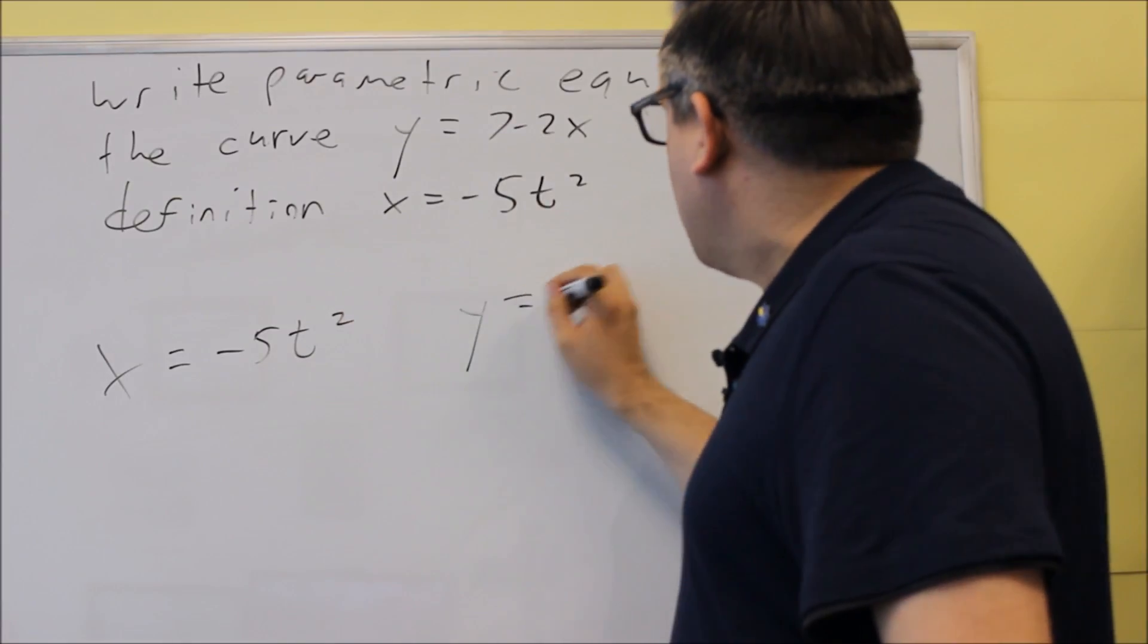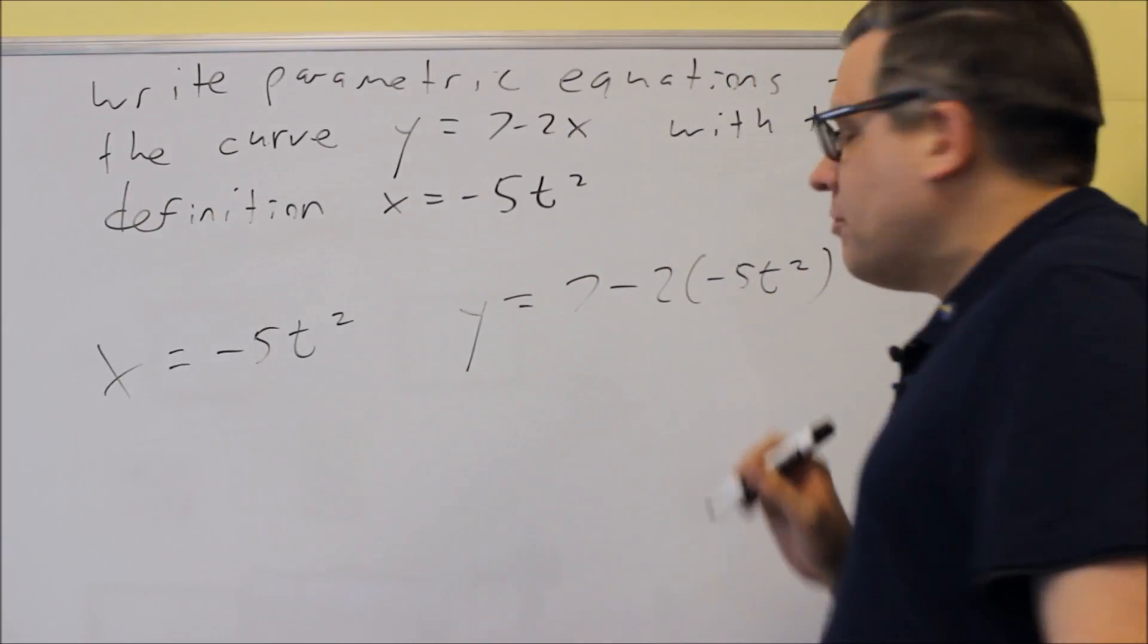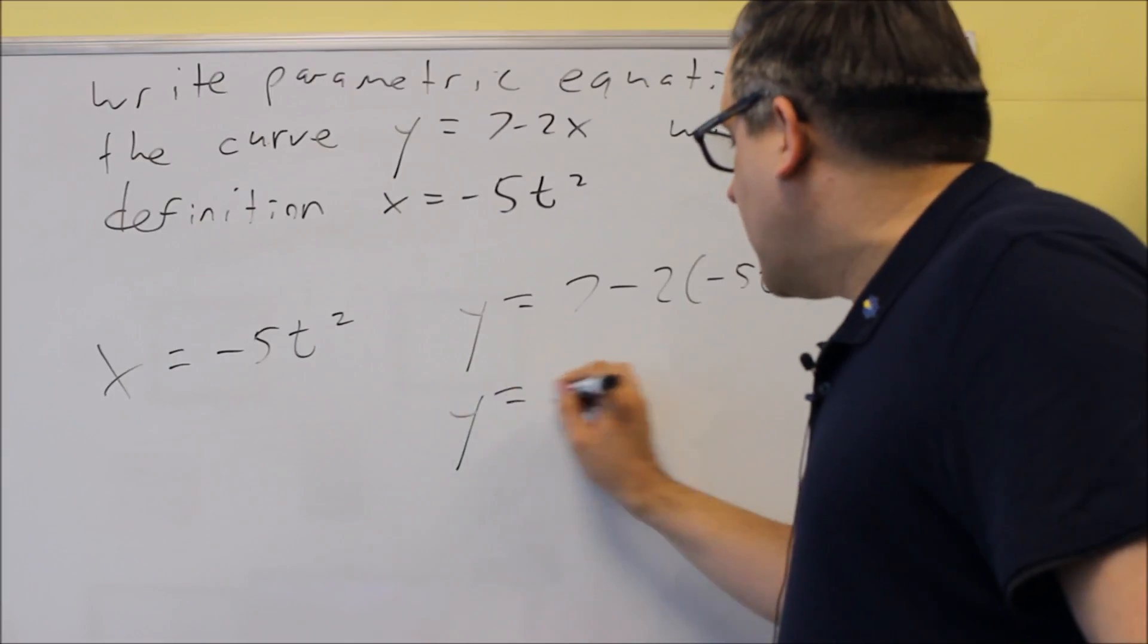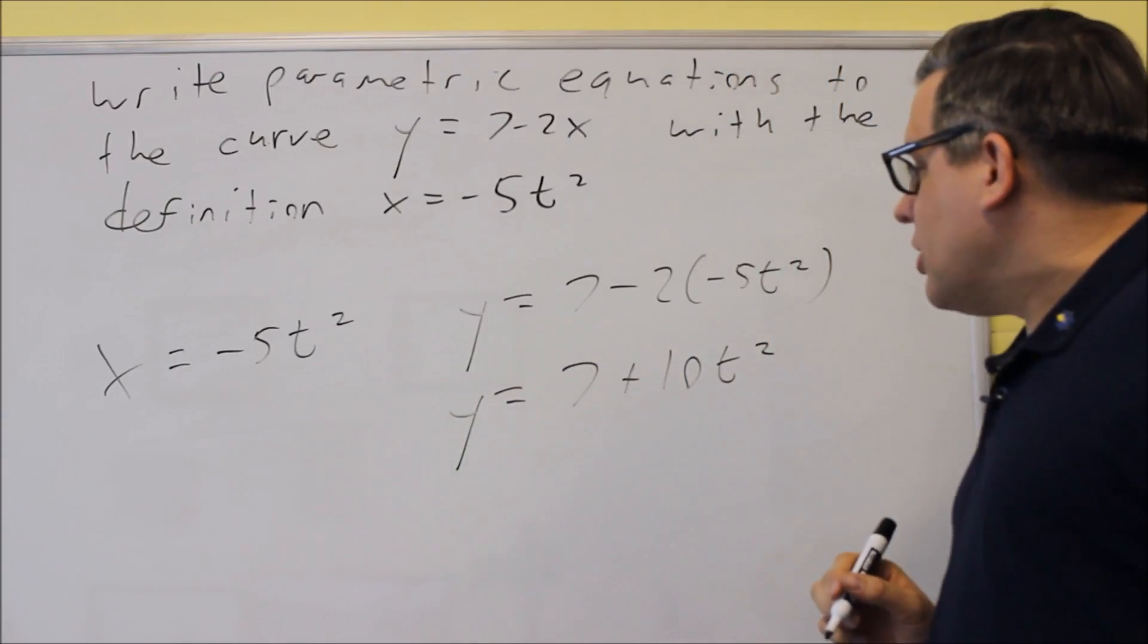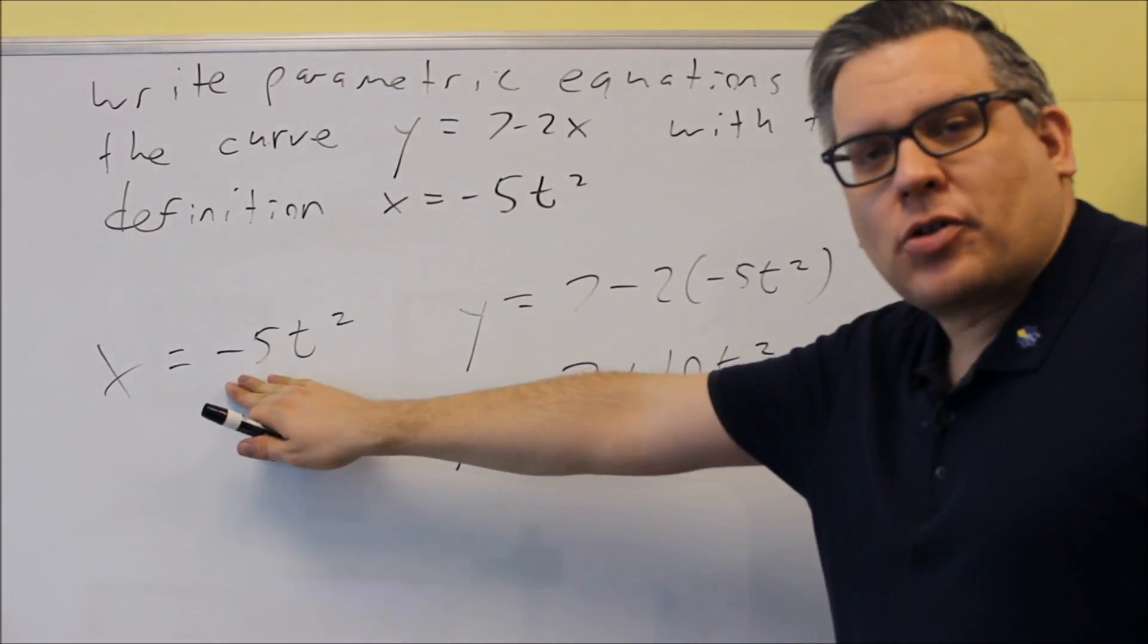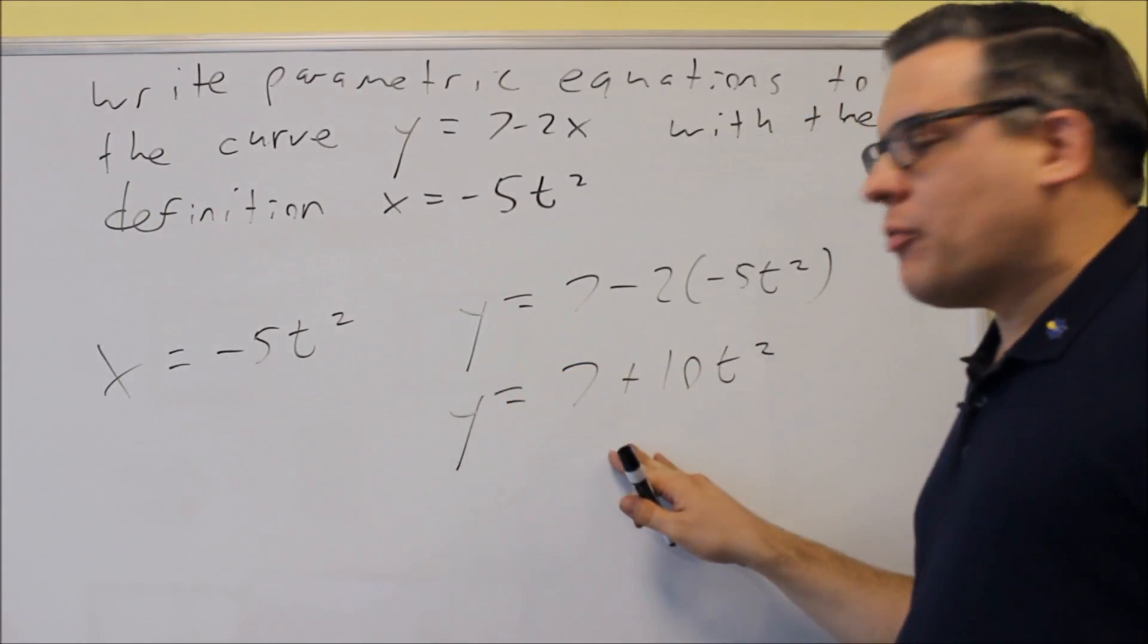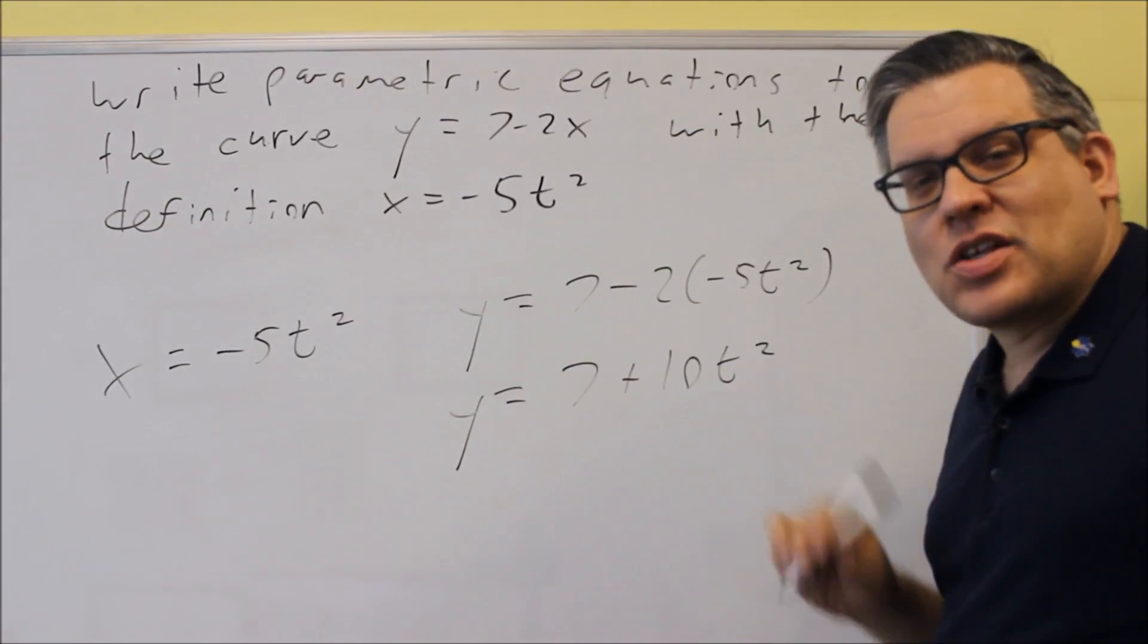We'll just substitute this into the other equation: 7 - 2(-5t²). Then simplify: y = 7 + 10t². That's all we have to do. First parametric equation x = -5t², second one y = 7 + 10t², so now we have a pair of parametric equations that go along with the original line.